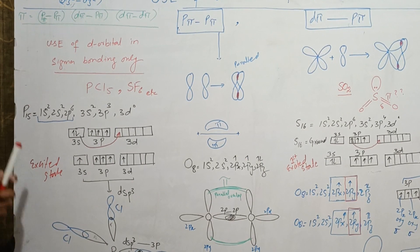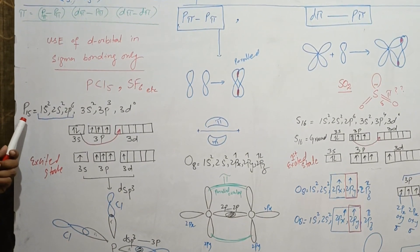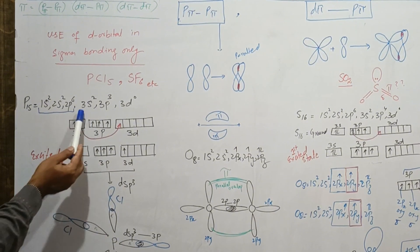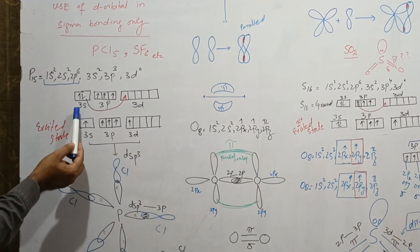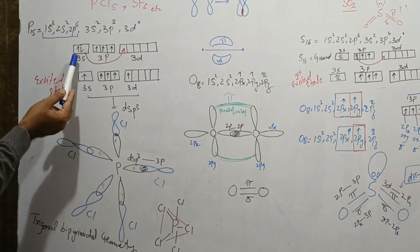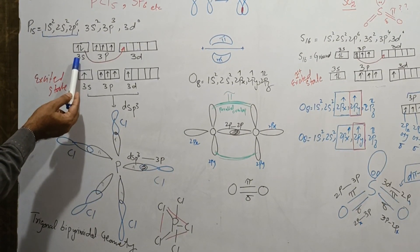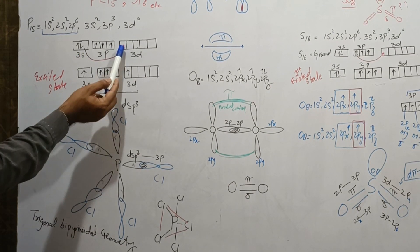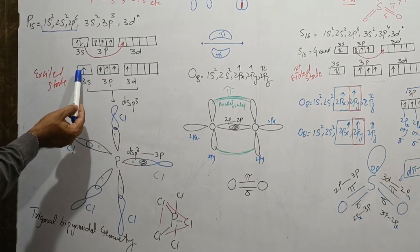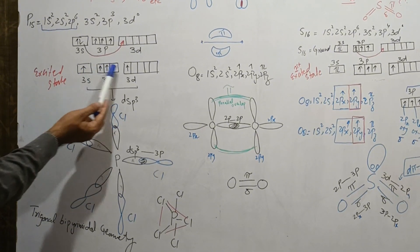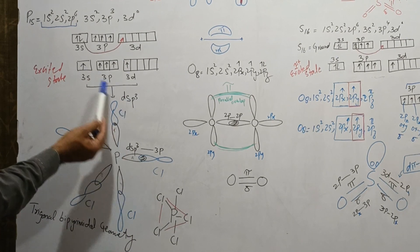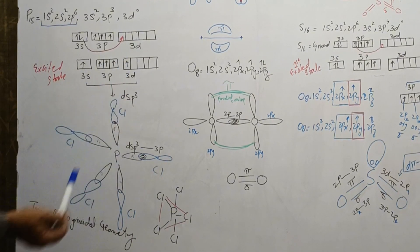The atomic number of phosphorus is 15 and its electronic configuration is given — this is the ground state. When phosphorus forms a bond, one of its electrons from 3s jumps to the vacant d orbital and we get the excited state. In the excited state, phosphorus contains five unpaired electrons.